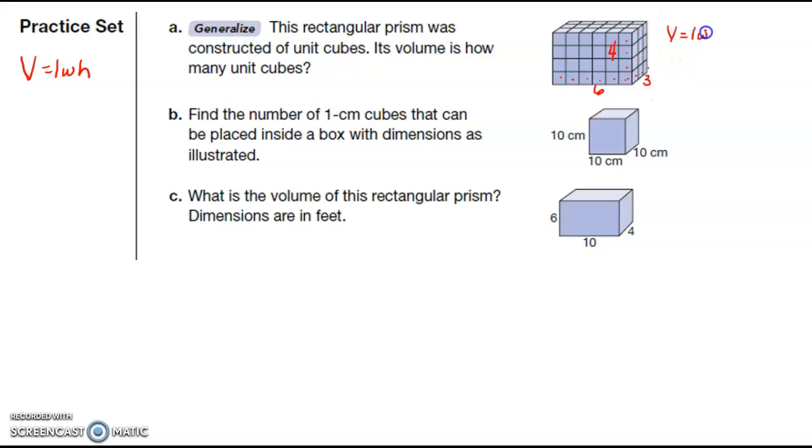So if I use my volume formula length times width times height, I have six times four times three, which is 24 times three or 12 times six, which is 72.